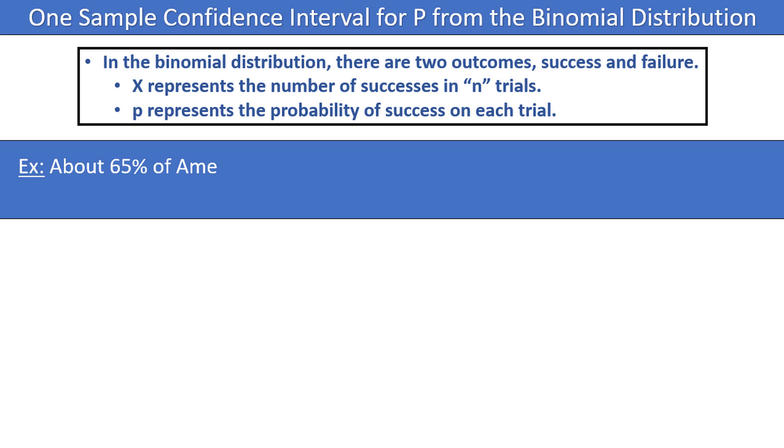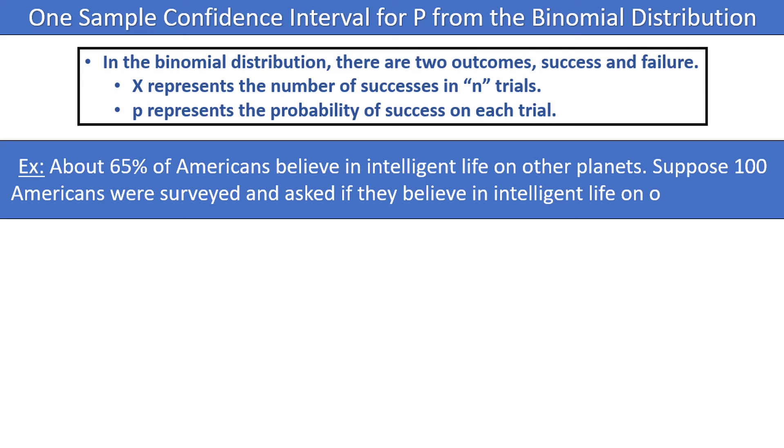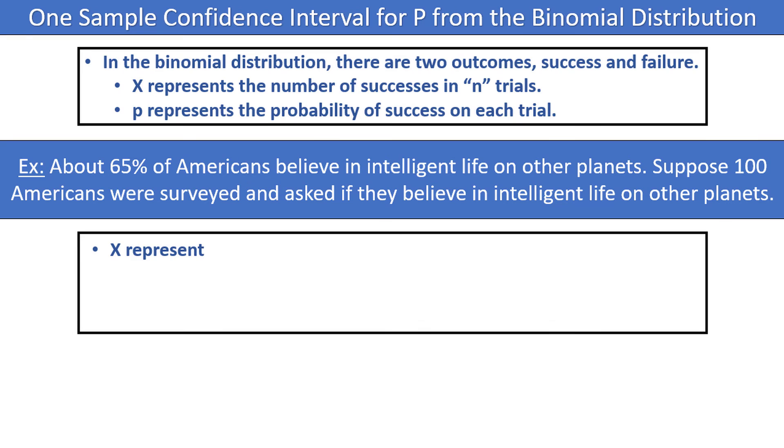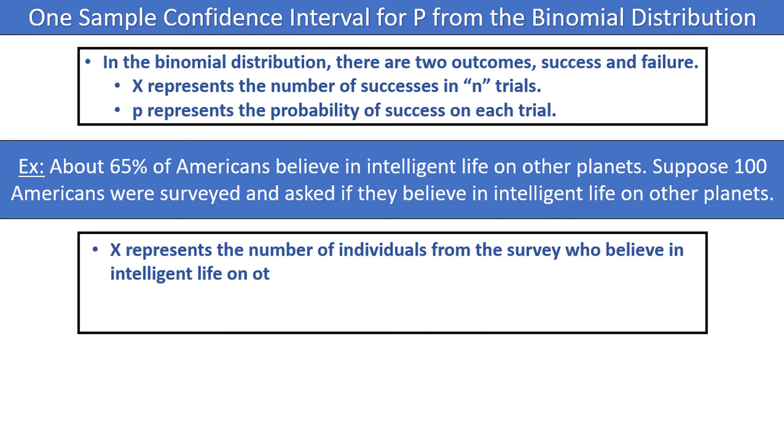For example, about 65% of Americans believe in intelligent life on other planets. Suppose that 100 Americans were surveyed and asked if they believe in intelligent life on other planets. x represents the number of individuals from the survey who believe in intelligent life on other planets, and follows a binomial distribution with a sample size of n equals 100, and a probability of success of p equals 0.65.